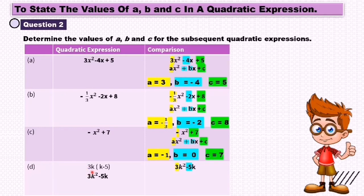(d) 3k(k - 5). So we expand: 3k times k equals 3k², and 3k times -5 equals -5k. So we still compare with ax² + bx + c. Therefore, a = 3, b = -5, and c = 0.